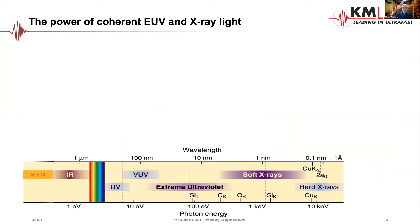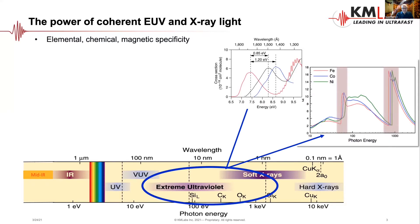Let me introduce the general characteristics of EUV and X-ray light. EUV stands for extreme ultraviolet, covering the spectral region from below 100 nanometers down to about one nanometer wavelength — wavelengths 100 to 1,000 times shorter than typical visible wavelengths. This spectral region is very interesting because it gives you a lot of power for elemental identification, chemical identification, or even looking at the magnetic state of a material.